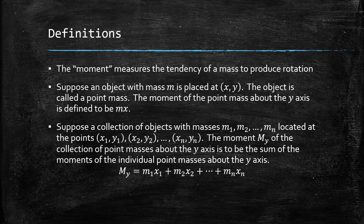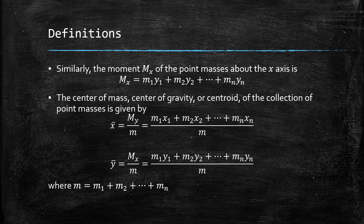The moment of the point mass about the y-axis is defined to be m times x. Now suppose a collection of objects with masses m₁, m₂, up to mₙ, located at points (x₁, y₁), (x₂, y₂), up to (xₙ, yₙ). The moment Mᵧ about the y-axis is the sum of individual moments: Mᵧ = m₁x₁ + m₂x₂ + … + mₙxₙ. Similarly, the moment Mₓ about the x-axis is: Mₓ = m₁y₁ + m₂y₂ + … + mₙyₙ.